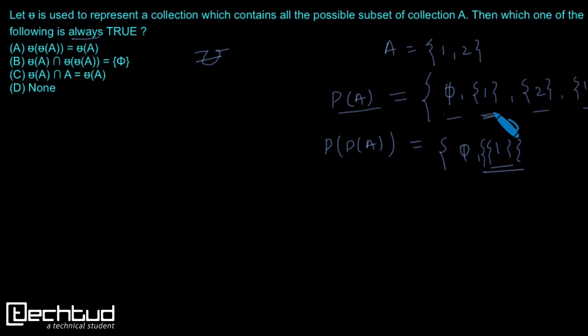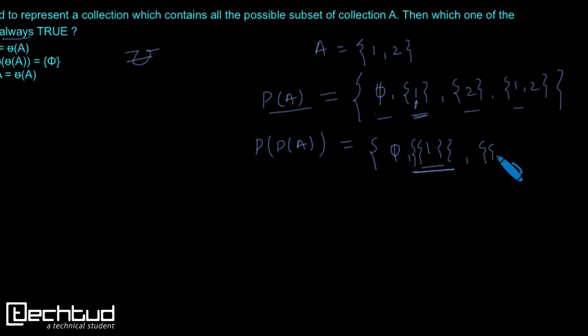Here it is a subset but element is a single element, this is a number not again subset. Here this is a subset but element is again a set. Similarly we will have {2}, then we will have {1, 2}, this one, and so on.